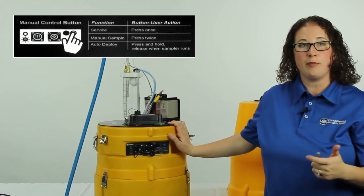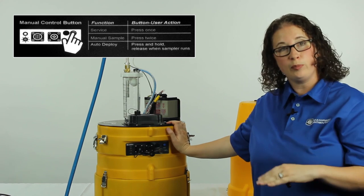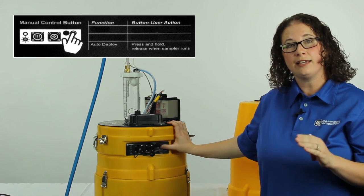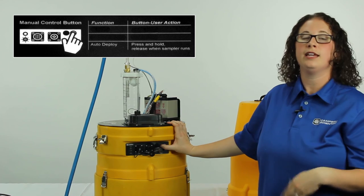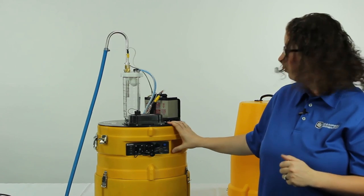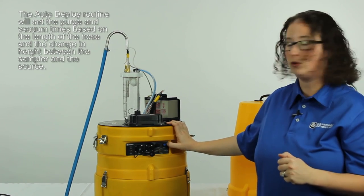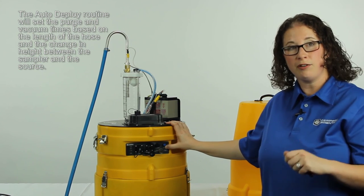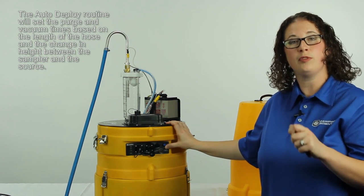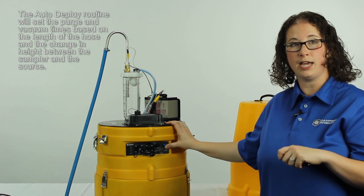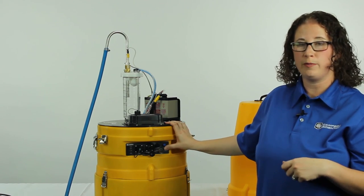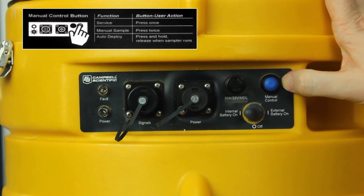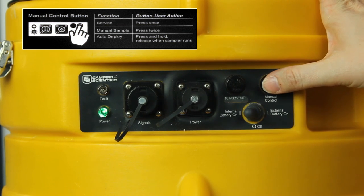A good first step when you're at a new site, you've never put a sampler out here, and you're not exactly sure what your purge time or vacuum time should be, is to run the auto deploy routine. We do this by pushing and holding the manual control button. When we run the routine, this will monitor and calculate the vacuum, the purge time, the vacuum time, and the sample drop time for you. We're going to push and hold the button until the sampler starts to run.